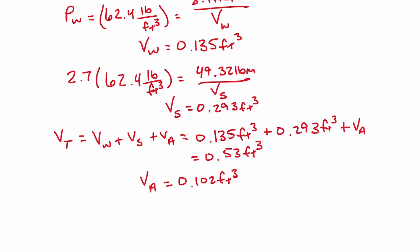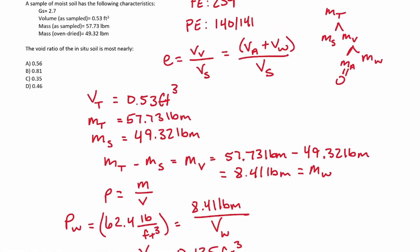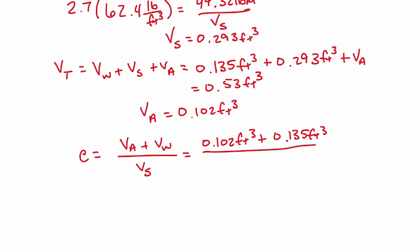We have everything we need now. Let's revisit our original formula. The void ratio equals the volume of the air plus the volume of the water over the volume of the solids: (0.102 + 0.135) / 0.293 cubic feet.